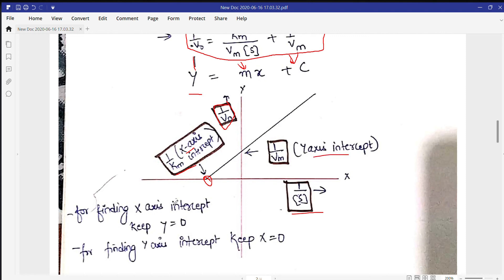So if we want to find the X axis intercept, then we need to put this zero. We need to put this zero if we want to find the X axis intercept. Same like, if we want to find the Y axis intercept, we need to keep X axis intercept zero. So this is the Lineweaver-Burk plot, and I hope you will understand what I taught today.